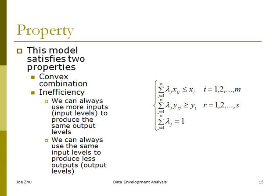And this model, again, if you have the book, you can look at the book that has two properties. One is convex combinations that we've talked about at the beginning, and then you also have the efficiency. The assumption here is that we can always use more inputs or input levels to produce the same amount of output levels, or we can always use the same input levels to produce less outputs.